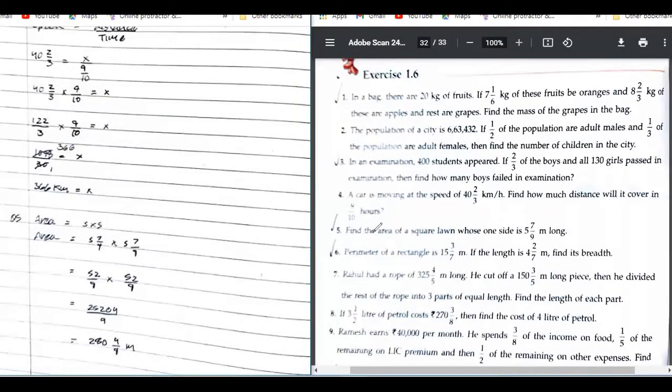So next question is: find the area of a square lawn whose one side is 5 7/9 meters long.